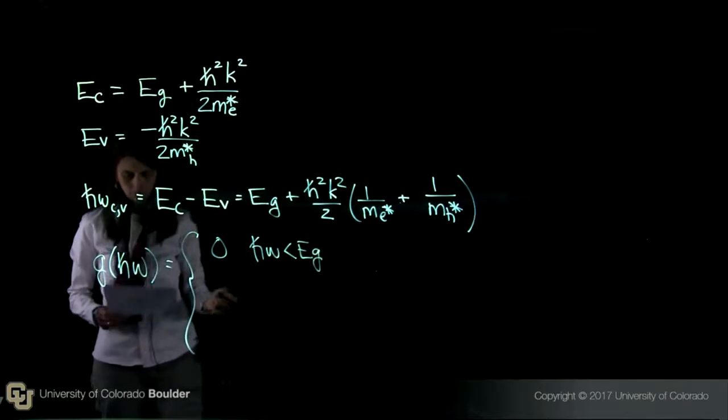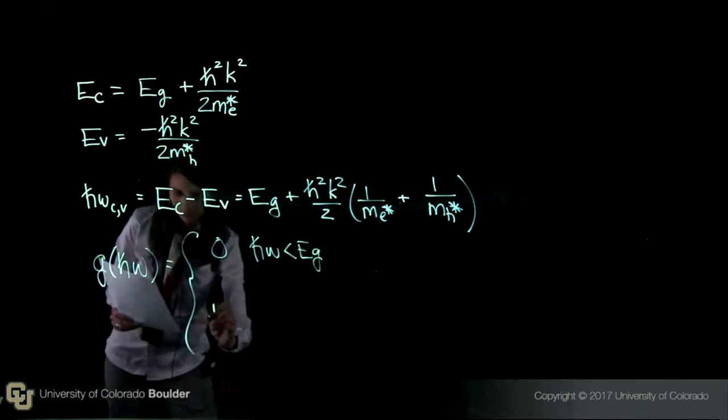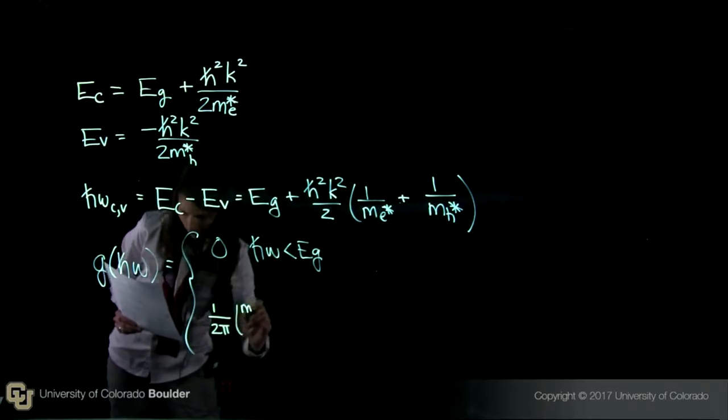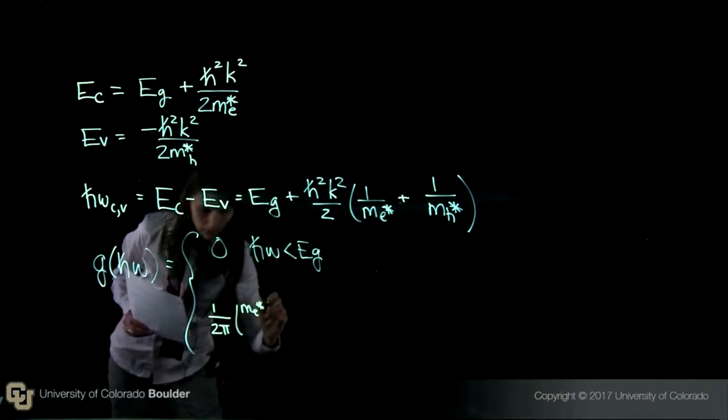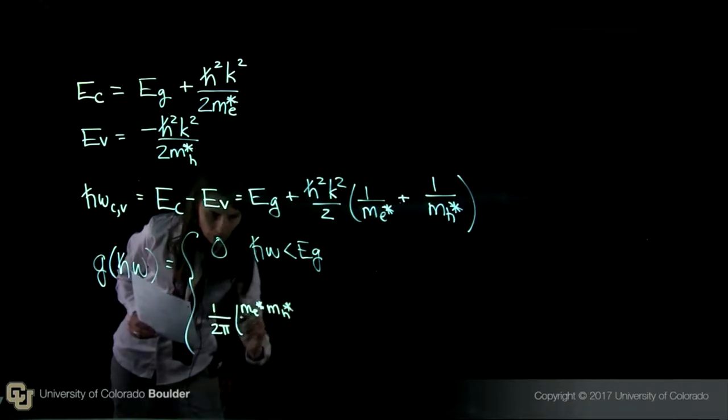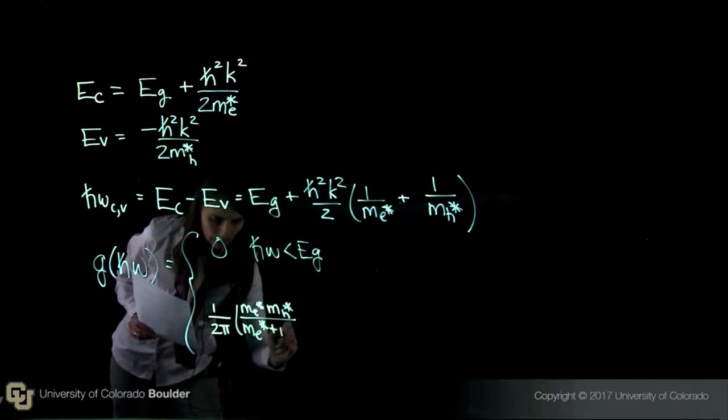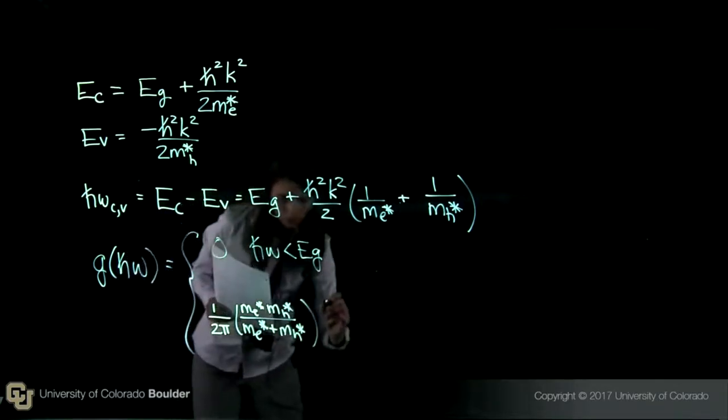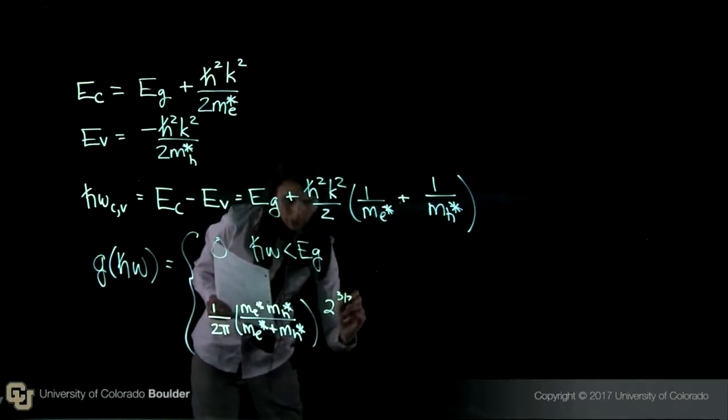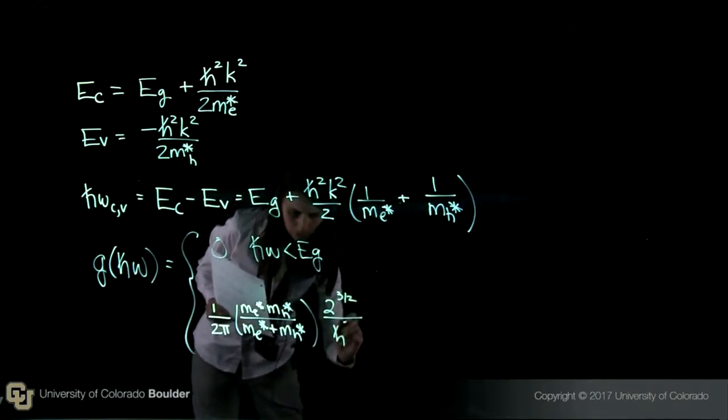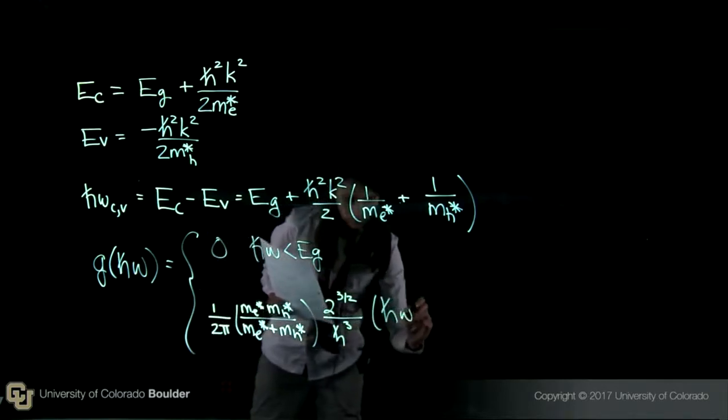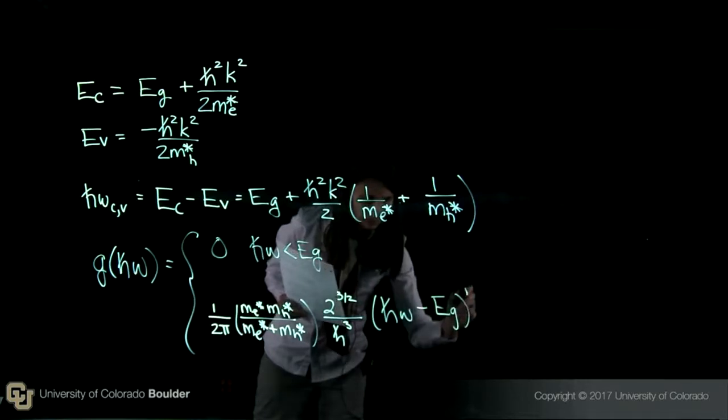But when I have the more interesting case where it's greater than E_g, then this equals 1 over 2 pi, and then m_e star m_h star over m_e star plus m_h star. And this is 2 to the 3 halves over h-bar cubed, and then h-bar omega minus E_g to the 1 half.